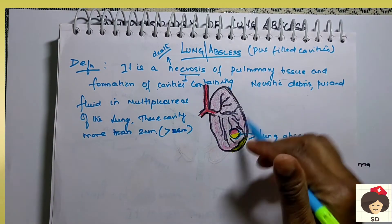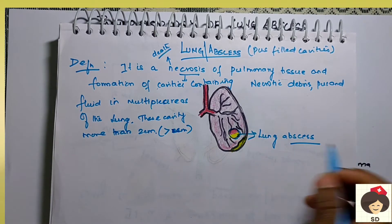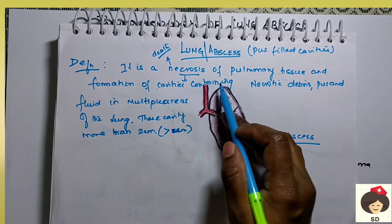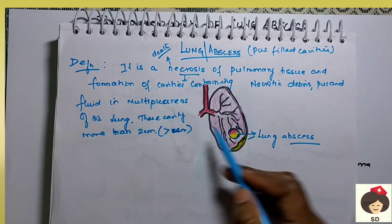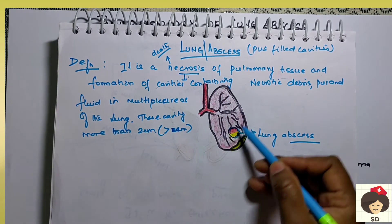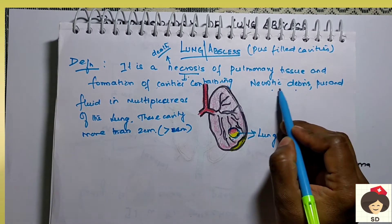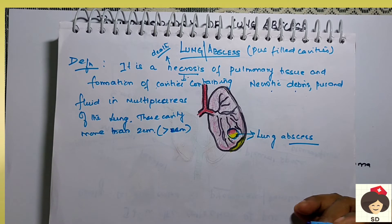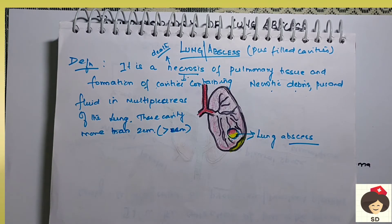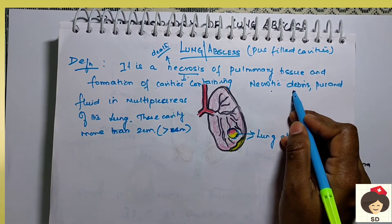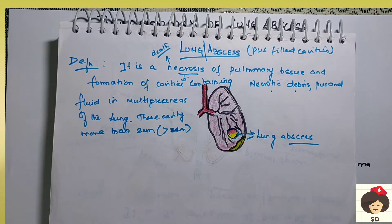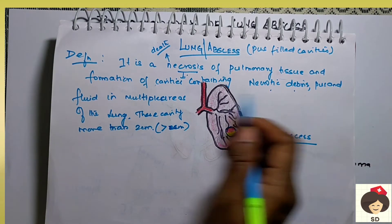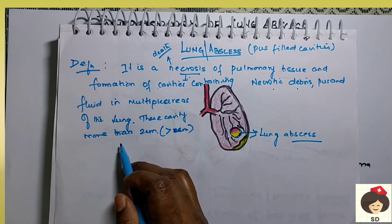Necrosis means the area dies because of inflammation, irritation, and decay of tissue. So pulmonary tissue goes for necrosis and forms cavities — pockets which contain necrotic debris. Necrotic debris means whenever microorganisms enter our body, our antibodies act against them. Both microorganisms and antibodies fight each other and die. Those dead cells are called debris, and these debris along with fluid form pus, present in multiple areas of the lungs.